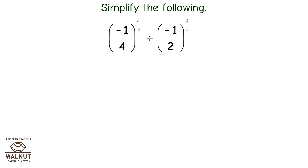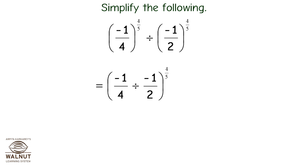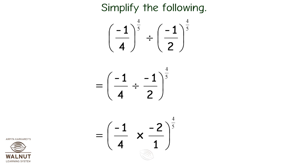Simplify: minus 1 upon 4 raised to 4 upon 5 divided by minus 1 upon 2 raised to 4 upon 5. This equals minus 1 upon 4 divided by minus 1 upon 2, whole raised to 4 upon 5, which equals minus 1 upon 4 into minus 2 upon 1, which equals 1 upon 2 raised to 4 upon 5.